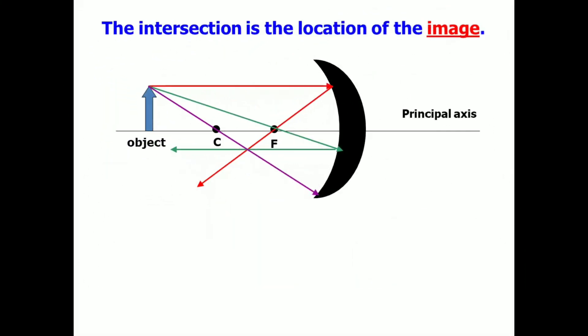You have to take note that the intersection is the location of the image. Therefore, the image appears here.